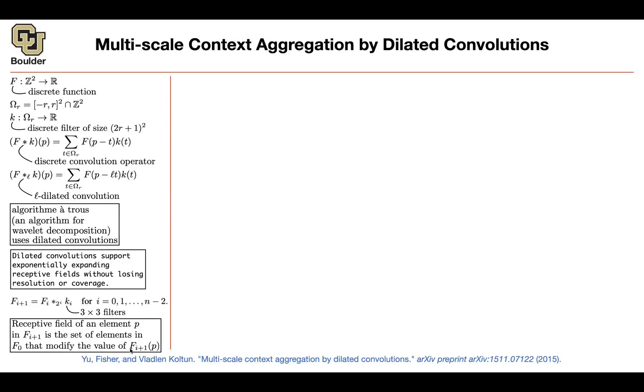So you take a pixel at the layer that you are currently at, at the feature map of layer i plus 1. And then you go back to your original image and try to identify which pixels are modifying this value. Or which pixels are responsible for modifying this value.